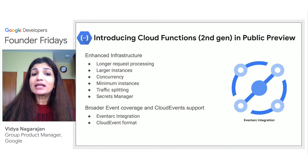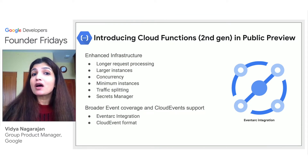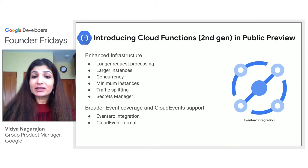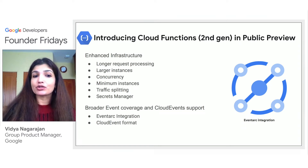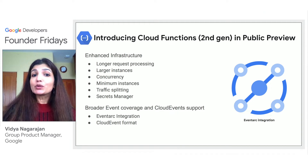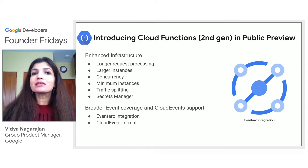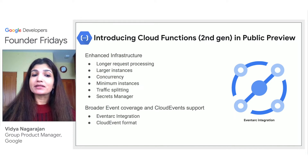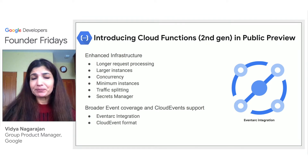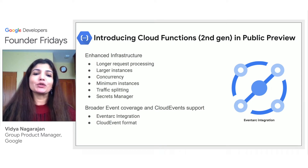Minimum instances allow you to provide pre-warmed instances to cut your cold starts and make sure the bootstrap time of your application does not impact performance. Traffic splitting allows you to support multiple versions of your functions, split traffic between different versions, and roll your function back to a prior version. Secrets Manager now offers native integration with Cloud Secrets Manager to get access to your secrets. You can additionally enjoy broader event coverage and industry-standard support for Cloud Events for a consistent development experience with the EventArc integration. EventArc brings over 90-plus sources using Cloud Audit Logs, and Cloud Functions still supports events from custom sources by publishing to Cloud Pub/Sub directly. EventArc also comes with a new simple UI in the Cloud Console.